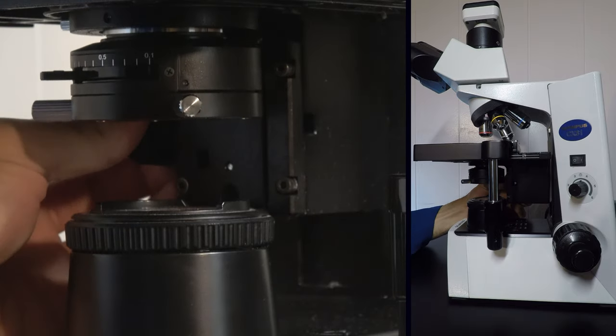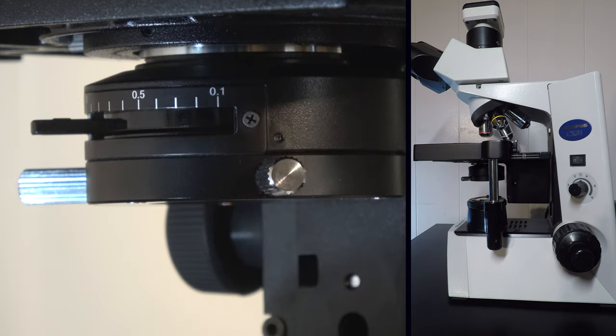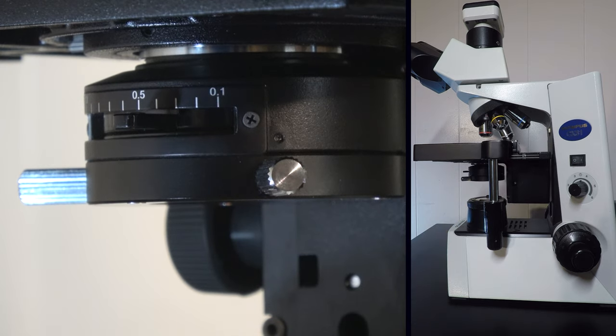The condenser is just below the stage. Move it to the upper position and then down about a half a centimeter. The iris diaphragm is located on the condenser. Move this lever to the halfway position.